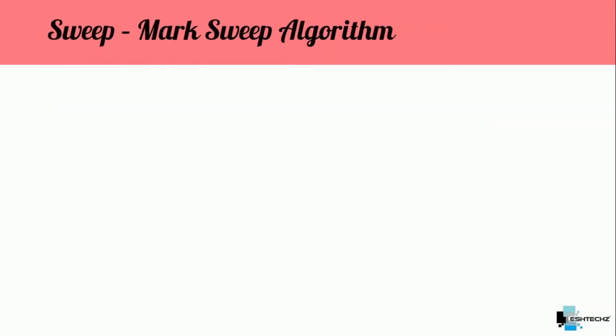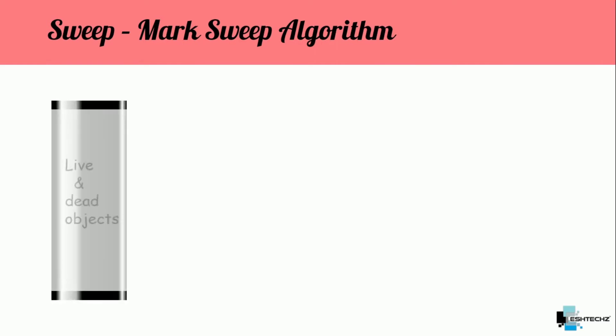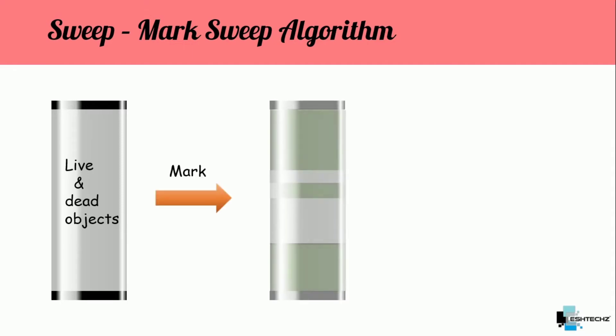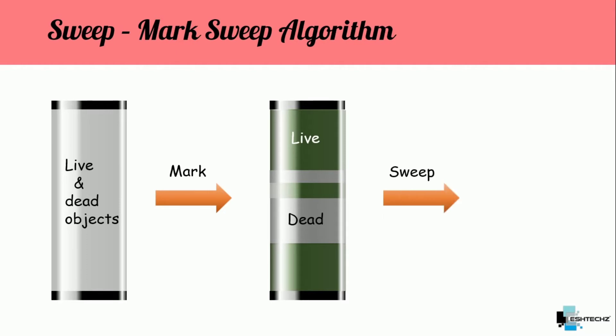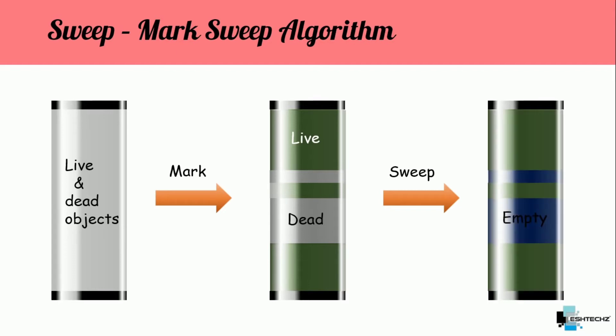The next part of mark sweep is the sweep phase. Assume this is our memory which contains live and dead objects. After the marking phase, the garbage collector knows which objects are live and which are dead. Here, green color represents the live objects whereas gray color represents the dead objects. In the sweep phase, the GC removes or reclaims the memory from the dead objects. The blue color in this picture is the reclaimed memory.